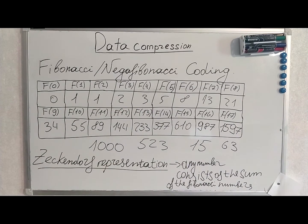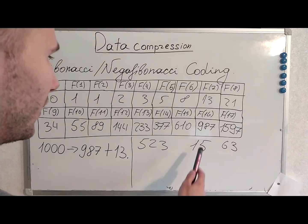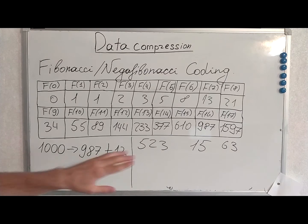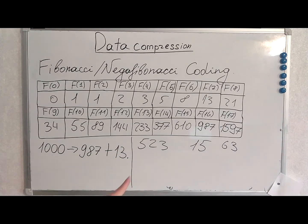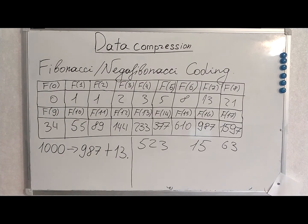I will show on examples that this actually works. To build the Zeckendorf representation, we first find the biggest Fibonacci number our target number contains. In the case of 1000, it is 987. Then we look for the next biggest Fibonacci number to make the sum work and reach 1000.